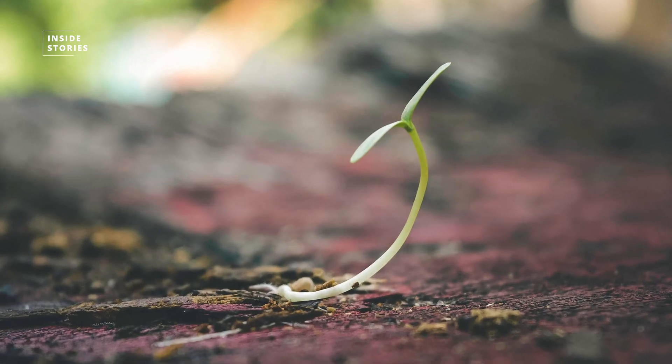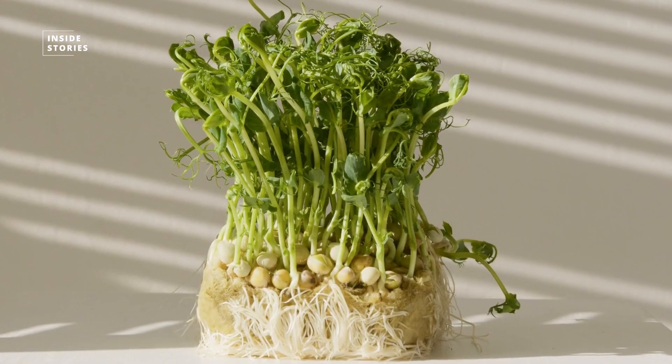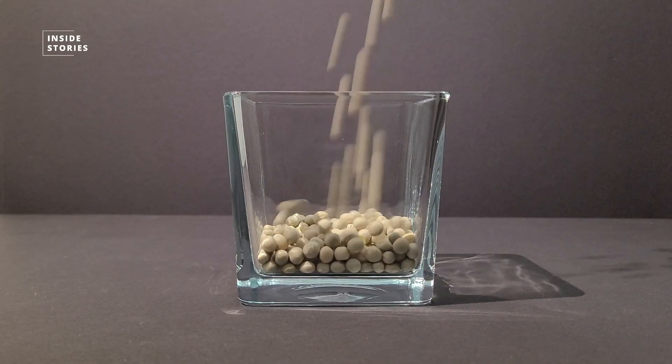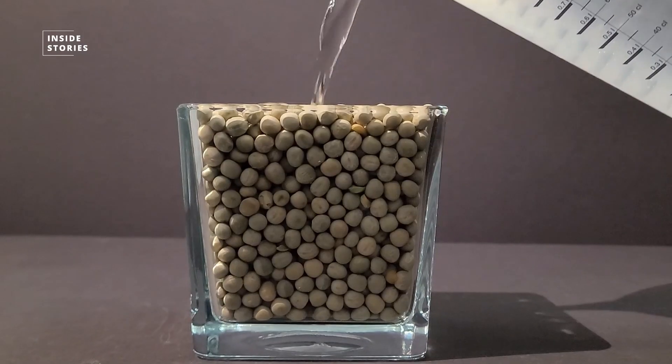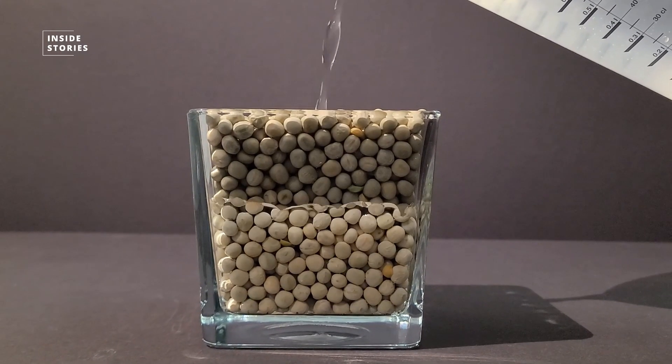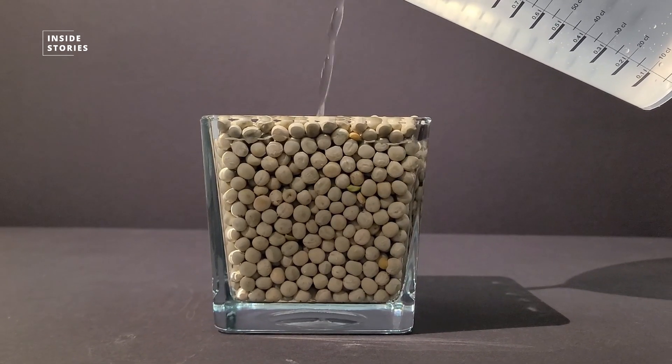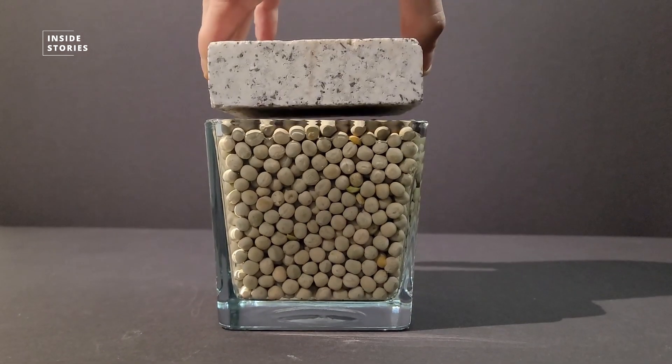To better demonstrate this power, let's do a quick experiment with sprouting peas. First, we put dried peas in a glass until they are flush with the top. Then we fill it up with some water until each pea is covered, and finally we put something heavy on top, like this stone.